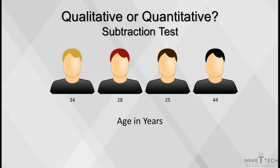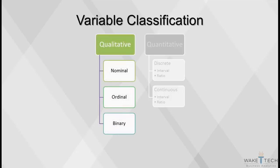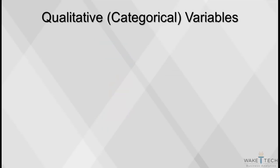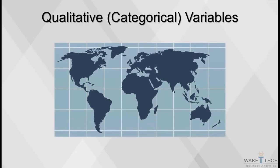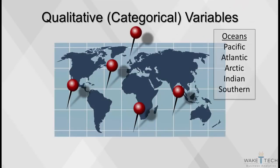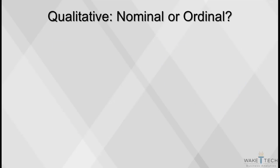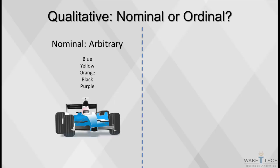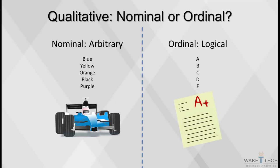Categorical variables are those that have only a few possible values, assigning each value to a particular group or category. Nominal and ordinal variables are often called labels. A nominal variable has levels with arbitrary names, for example car colors. Ordinal variables have a logical order, for example exam grades. A dichotomous or binary variable is a categorical variable that has only two levels or categories, often the answer to a yes or no question — but a variable just has to have two categories, such as gender.